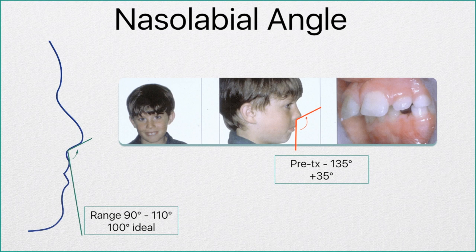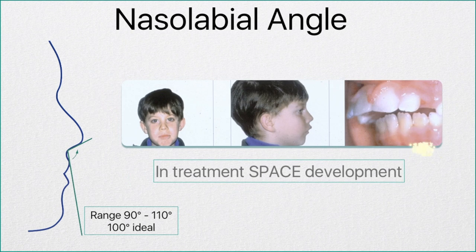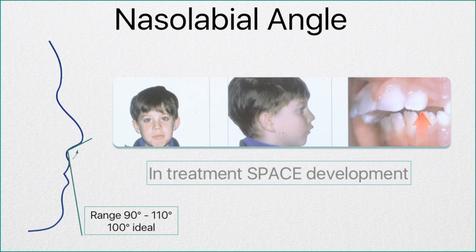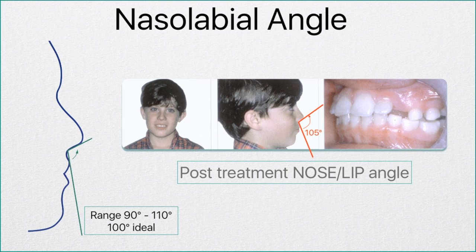This boy had a number of orthodontic opinions recommending headgear and/or tooth extraction to retract his front teeth back. His mother thought better of that and had us do orthotropics. Here you can see what we do with orthotropics: we advanced the upper incisors about 8 to 10 millimeters, creating an even larger overjet. We then developed the mandible forward with an appliance which negates the headgear effect, and you can see the nice forward development of the mandible that has occurred.